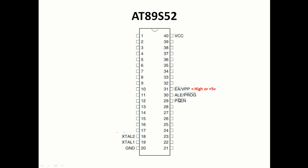Program Store Enable (PSEN) is used to read external program memory, so we are not going to use this pin either — ALE and PSEN will be left in floating mode. Pin 9 is the reset pin, used for resetting the program in the microcontroller. Whenever a positive 5-volt signal is provided at this pin for two machine cycles — one machine cycle is 12 clock pulses, so two machine cycles is 24 clock pulses — the program resets and starts again from the beginning.